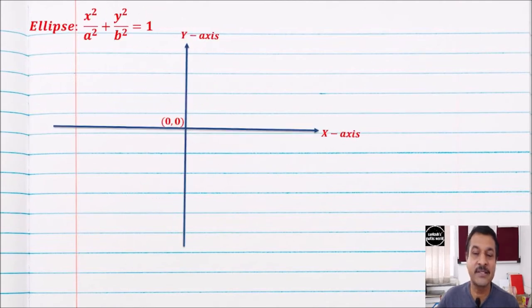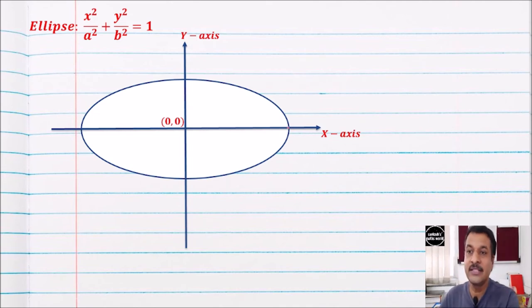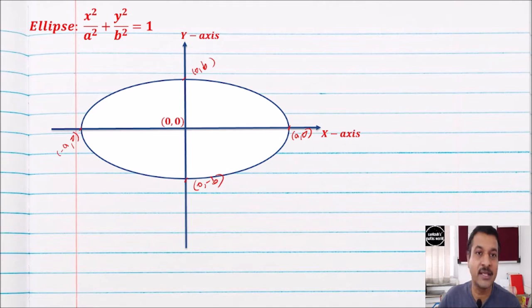Also remember the ellipse — it is a well-known curve. The key points are: (a, 0), (0, b), (−a, 0), and (0, −b).